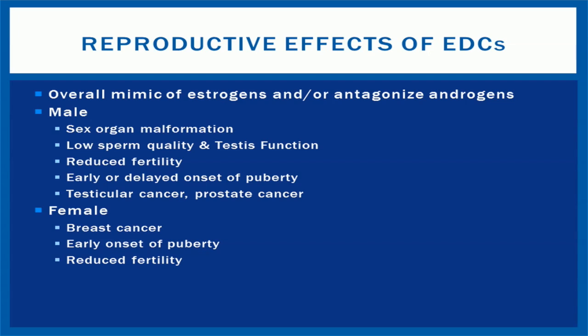In males, this may lead to sex organ malformation, low sperm quality and testes function, reduced fertility, early or delayed onset of puberty, testicular cancer, and prostate cancer. In females, this may lead to breast cancer, early onset of puberty, and reduced fertility. Although the main focus of research to date has been on male reproductive health, EDCs can interfere with both male and female reproductive function.